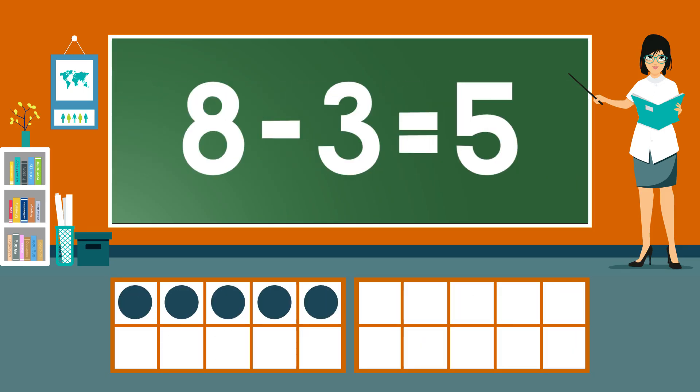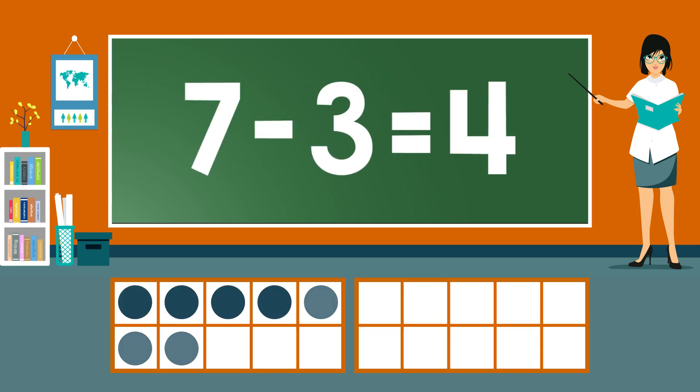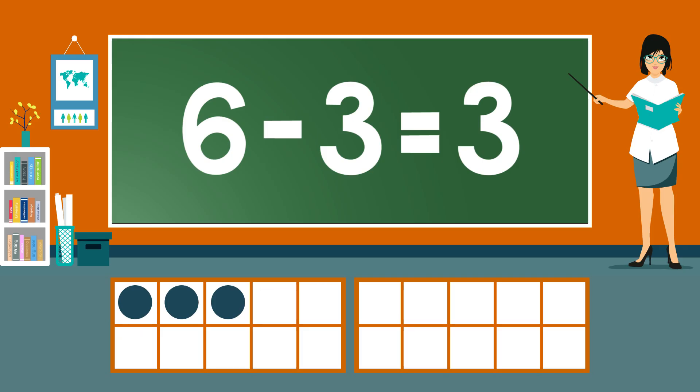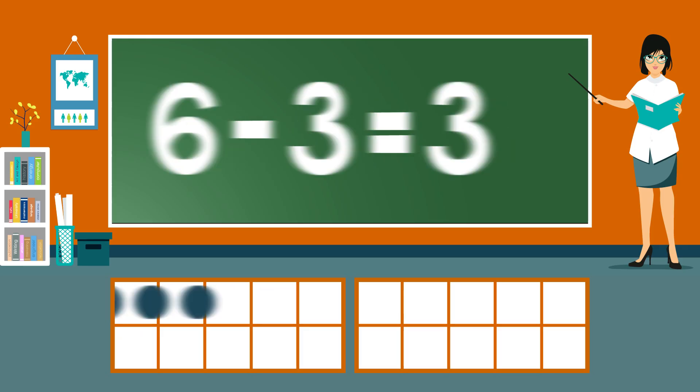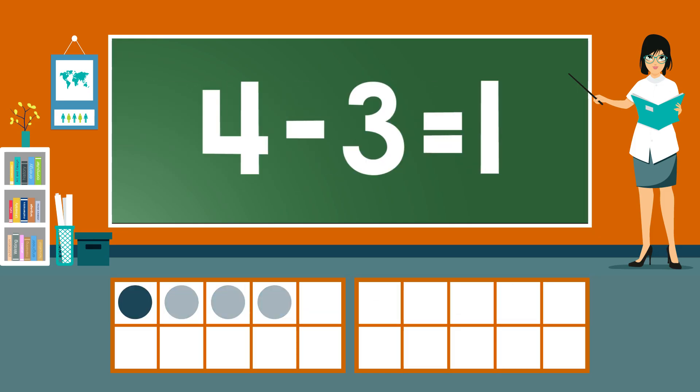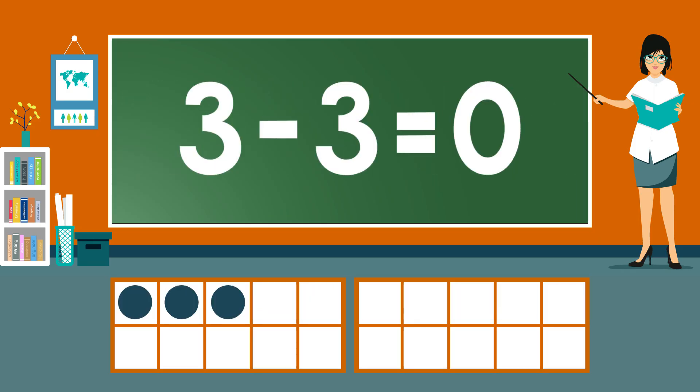5. 7 minus 3 equals 4. 6 minus 3 equals 3. 5 minus 3 equals 2. 4 minus 3 equals 1. 3 minus 3 equals 0.